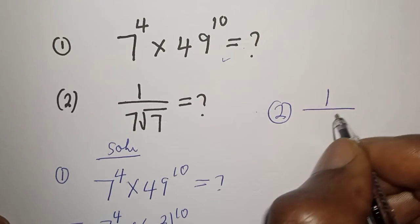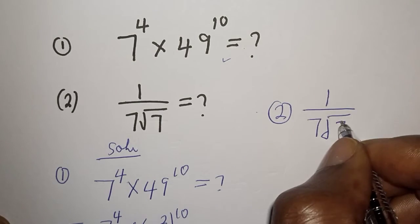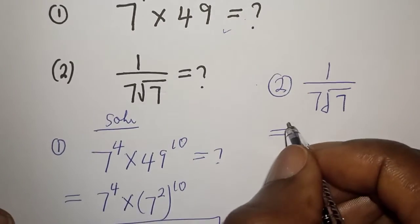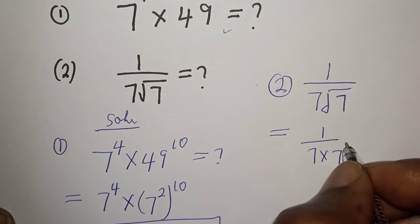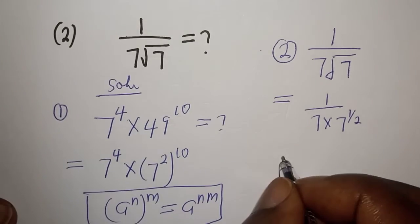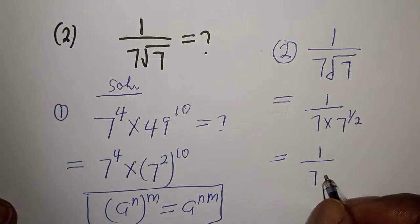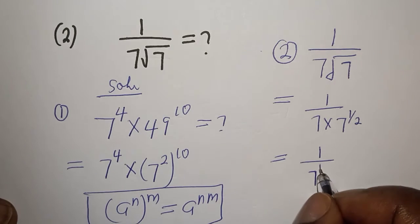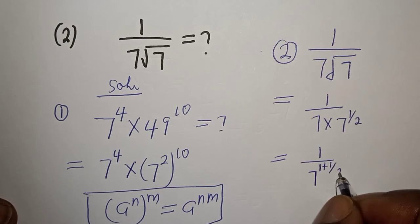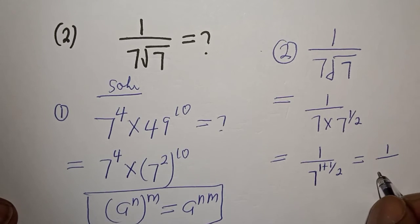1 over 7 root of 7 and this is equal to 1 over 7 raised to power 1 plus 1 over 2. This is equal to 1 over 7 raised to power 3 over 2.